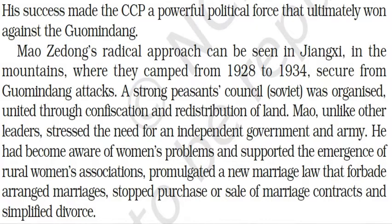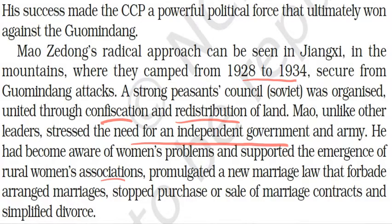Mao Zedong's radical approach can be seen in Jiangxi, in the mountains, where they camped from 1928 to 1934, secure from Kuomintang attacks. A strong peasants' council was organized, united through confiscation and redistribution of land. Mao, unlike other leaders, stressed the need for an independent government and an army. He had become aware of women's problems and supported the emergence of rural women's associations. He promulgated a new marriage law that forbade arranged marriages, stopped the purchase or sale of marriage contracts, and simplified divorce. These are the reforms made by Mao Zedong to address women's suffering.